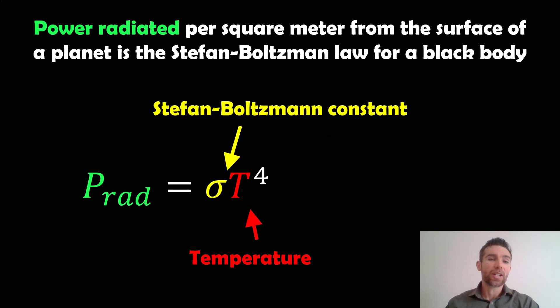Now we need to consider the power radiated per square meter from the surface of the planet. We can use the Stefan-Boltzmann law for a black body. The power radiated is the Stefan-Boltzmann constant times the temperature to the fourth power. Depending on how hot this black body or planet is, assuming it's a perfect black body, the power radiated is a function of the temperature to the fourth power. As you increase temperature, the power radiated increases accordingly.